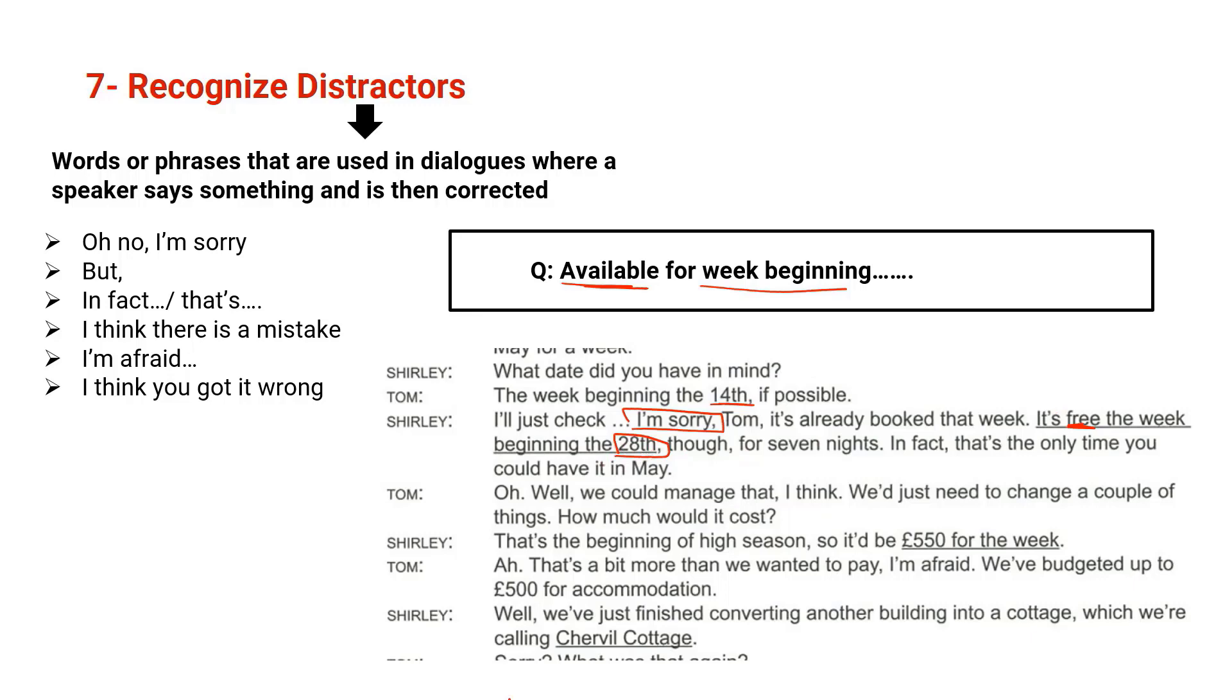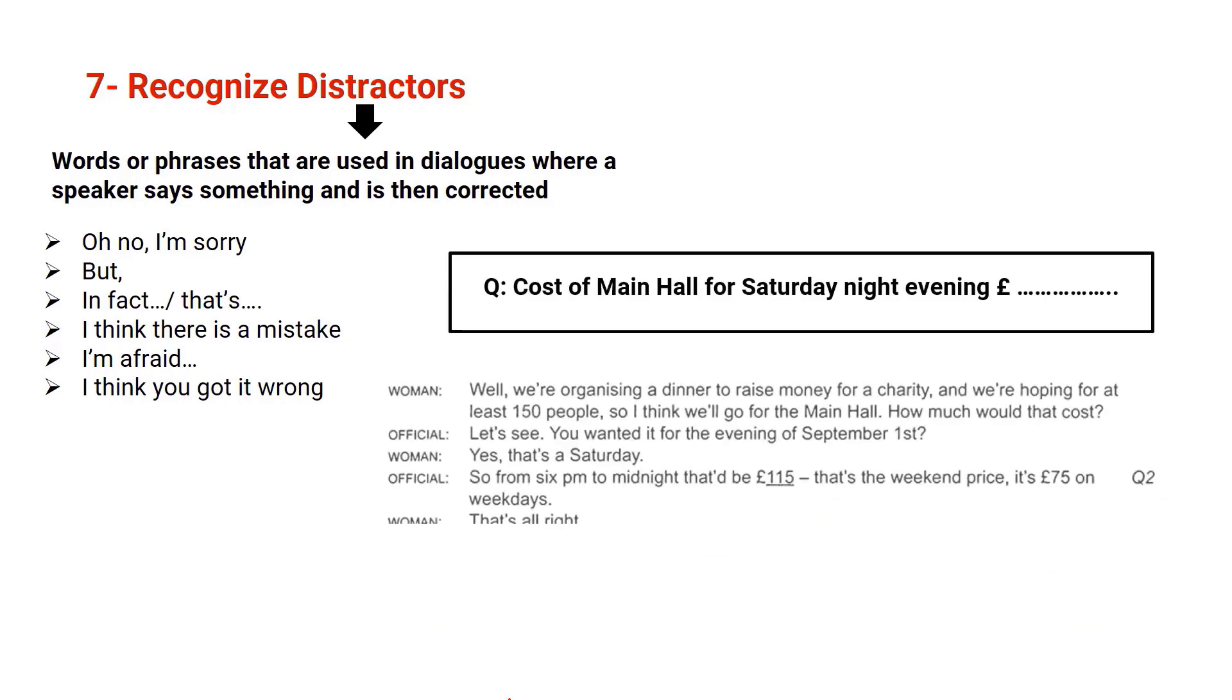Now let's see another example. Cost of main hall for Saturday night evening. So the keywords here we have cost, main hall, and of course we have Saturday night. The script: Well, we're organizing a dinner to raise money for a charity and we're hoping for at least 150 people. So I think we will go for the main hall. How much would that cost? Let's see. You wanted it for the evening of September the first? Yes, that's a Saturday. So from 6 p.m. to midnight that would be 115 pounds. That's the weekend price. It's 75 pounds on weekdays.